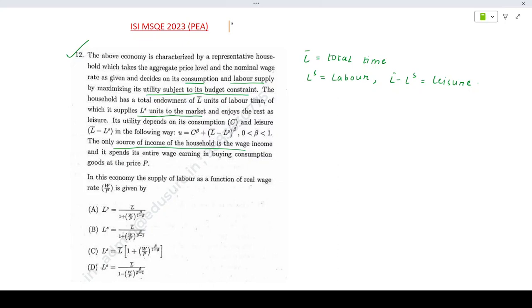The only source of income of the household is the wage income and it spends its entire wage income in buying the consumption goods at price P.